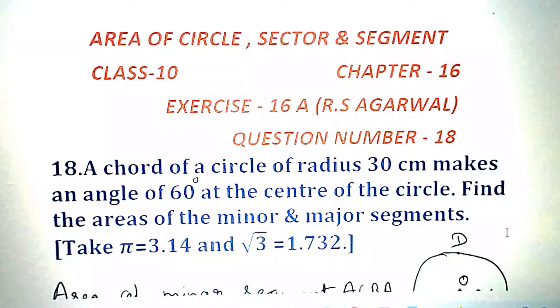A chord of a circle of radius 30 cm makes an angle of 60 degrees at the center of the circle. Find the areas of the minor and major segments.